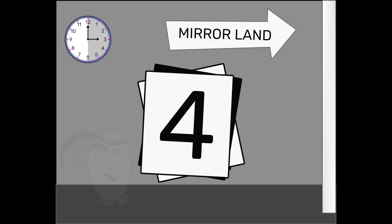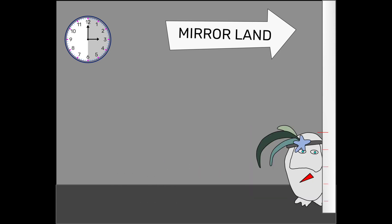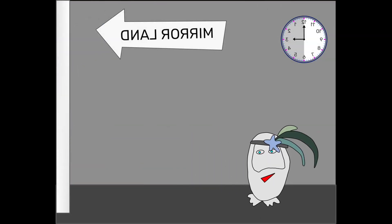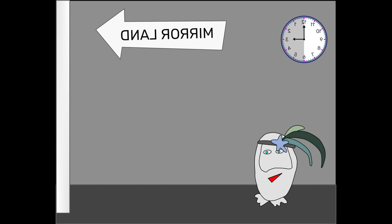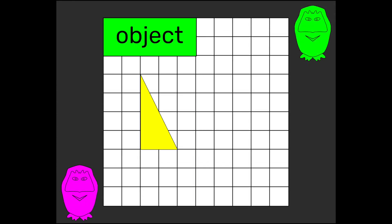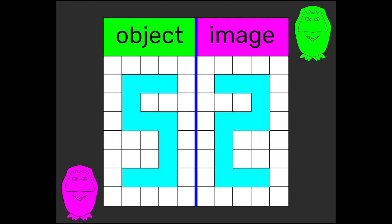Take an object and a mirror line, an image you can make. Keep your distance from the line the same and you'll make no mistake. Take an object and a mirror line, an image you can make. Keep your distance from the line the same and you'll make no mistake.